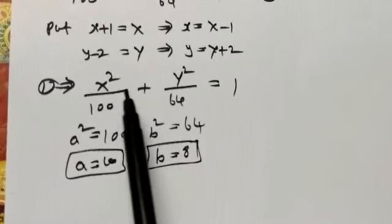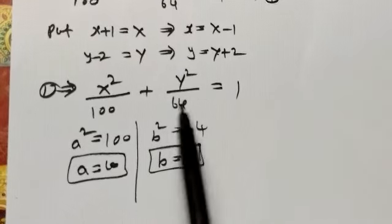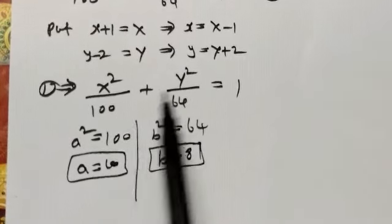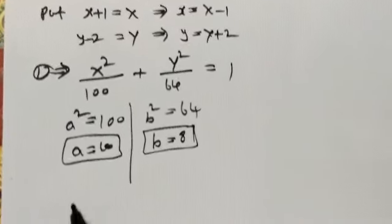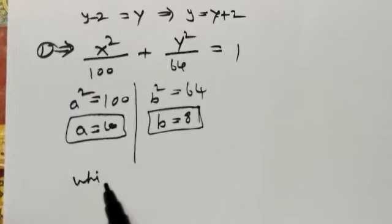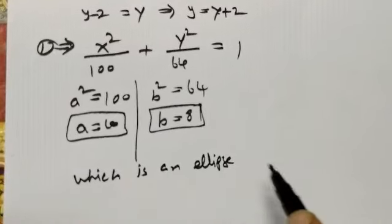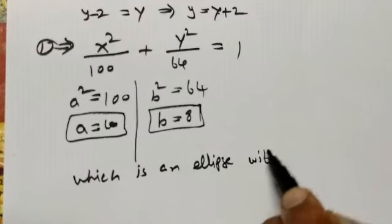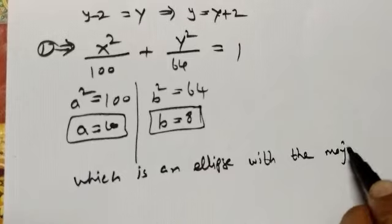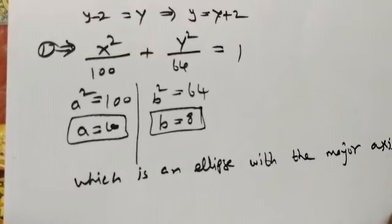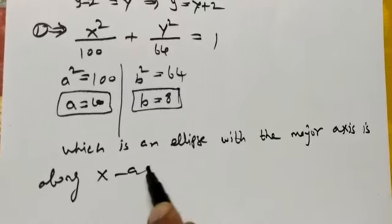This is the format X²/a² + Y²/b² = 1, Type 1. The major axis is along the capital X-axis.